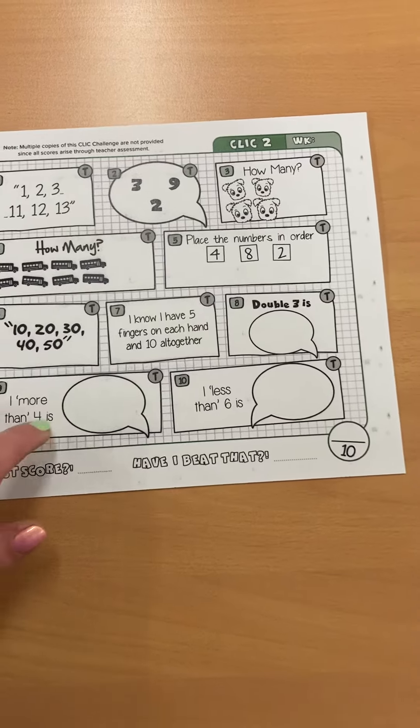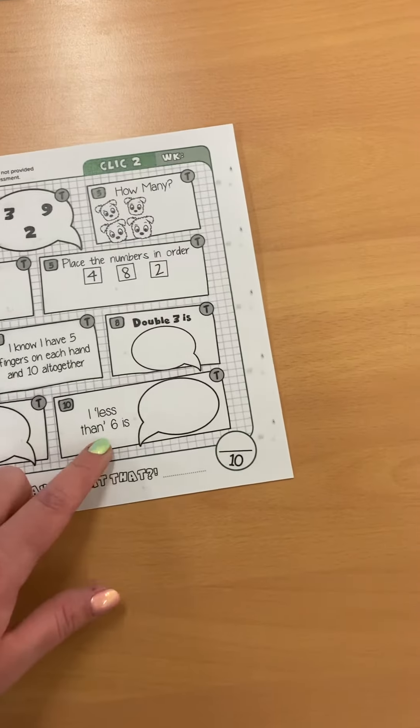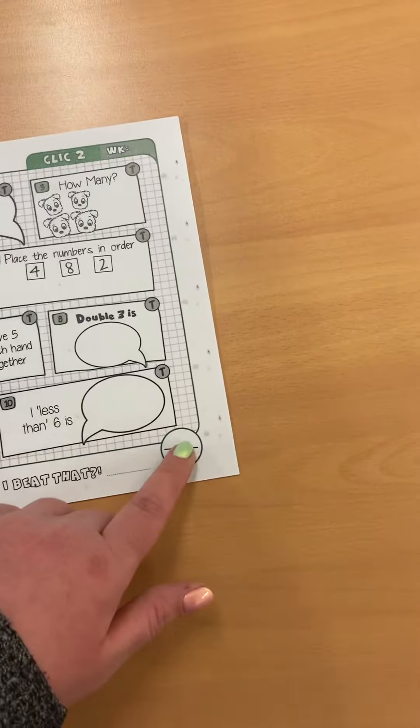What is one more than 4? Write it in here. And one less than 6? Write it in here. And then add up your score.